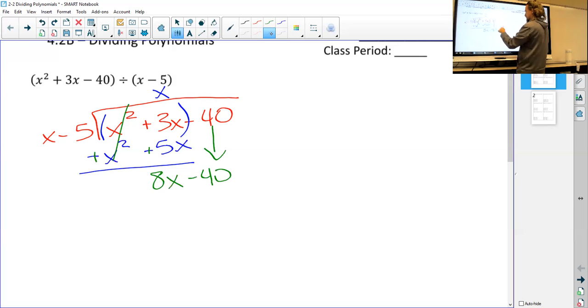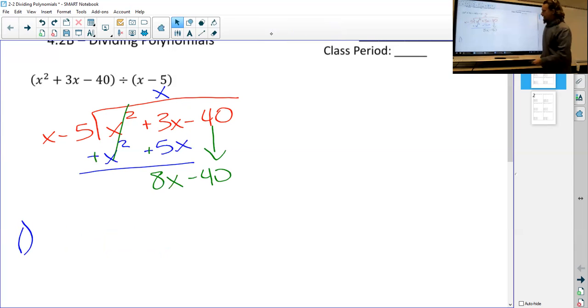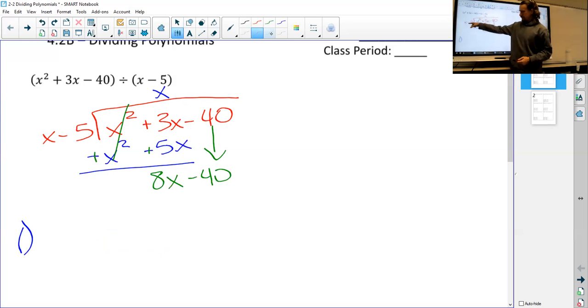Then I move on, so I bring down my negative 40. Don't be fooled because I put those parentheses there—this is indeed negative 40. And then we just start all over again. What's 8x divided by x, or x times what is 8x? You would get a positive 8, so we put plus 8 up here.